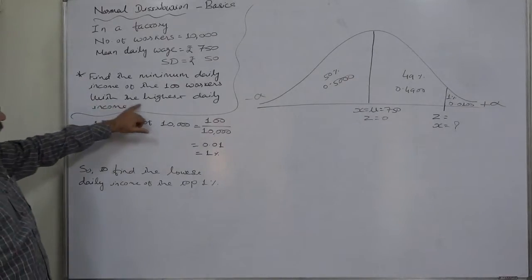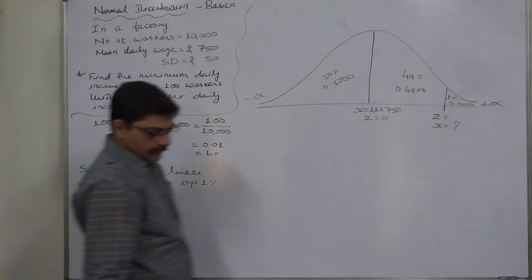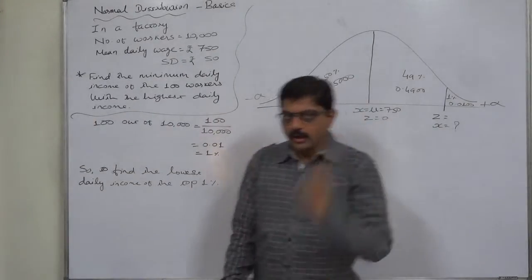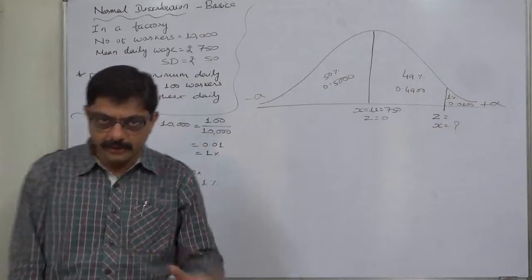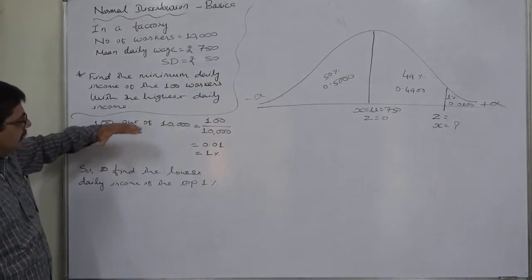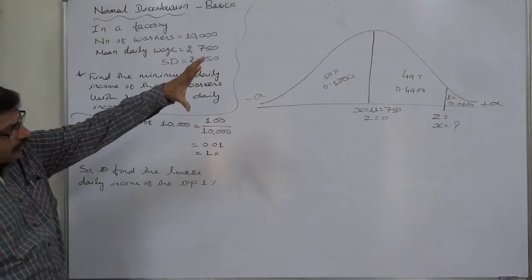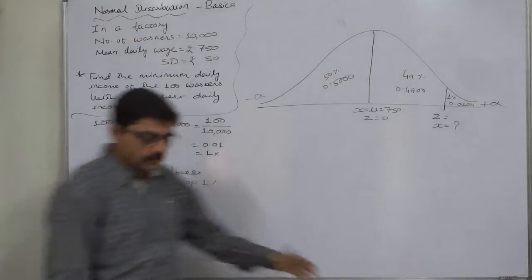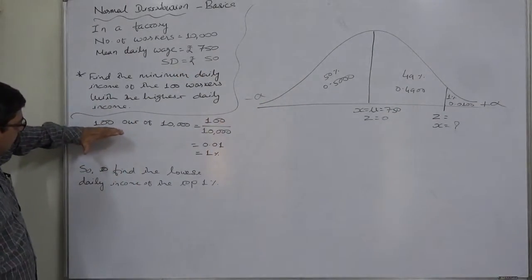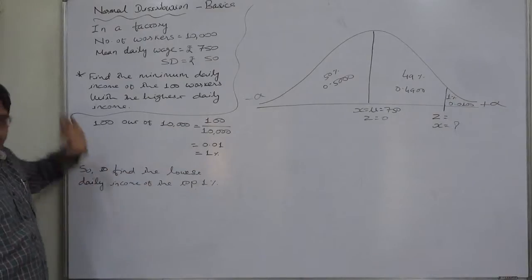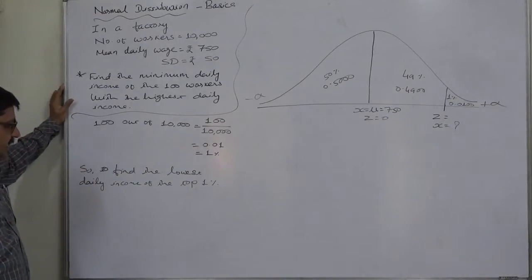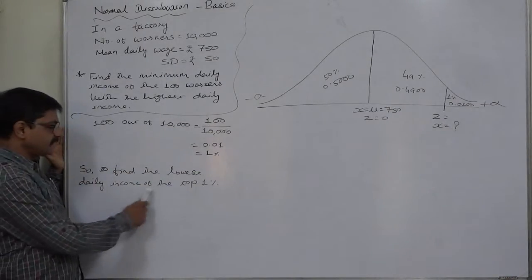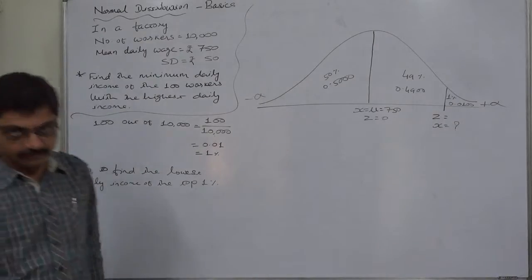The 100 workers with the highest income per day—we need to find the lowest income in that group. Since 100 out of 10,000 means 1%, we need to find the lowest daily income of the top 1% workers.